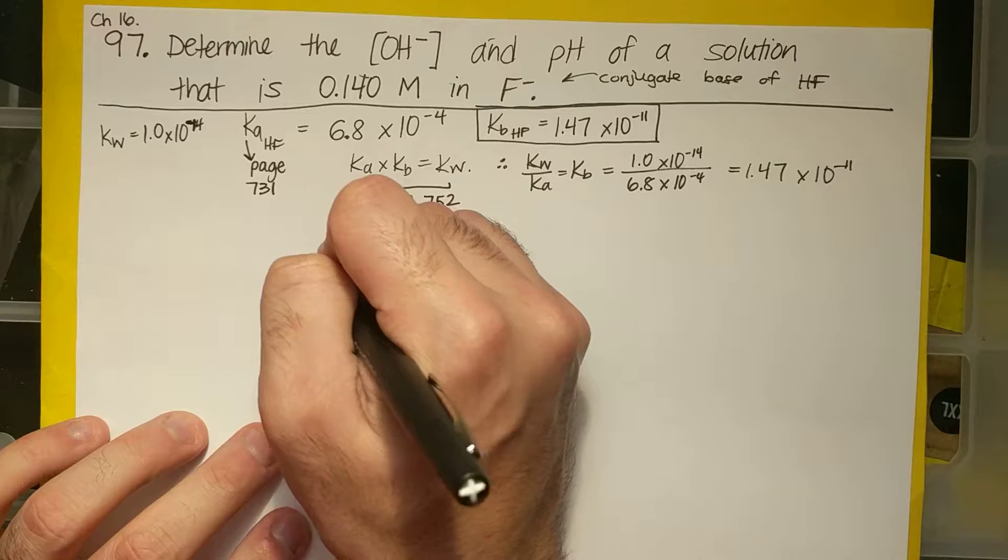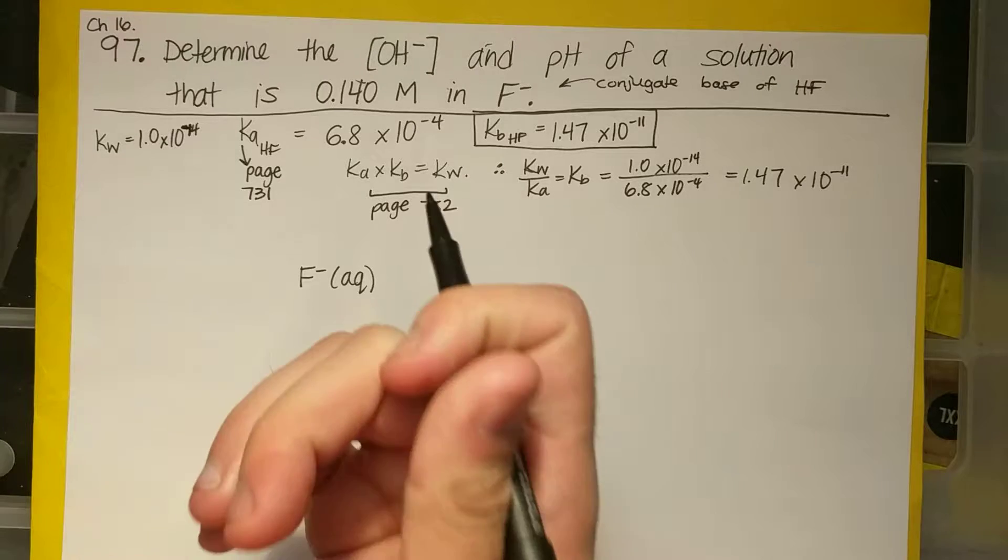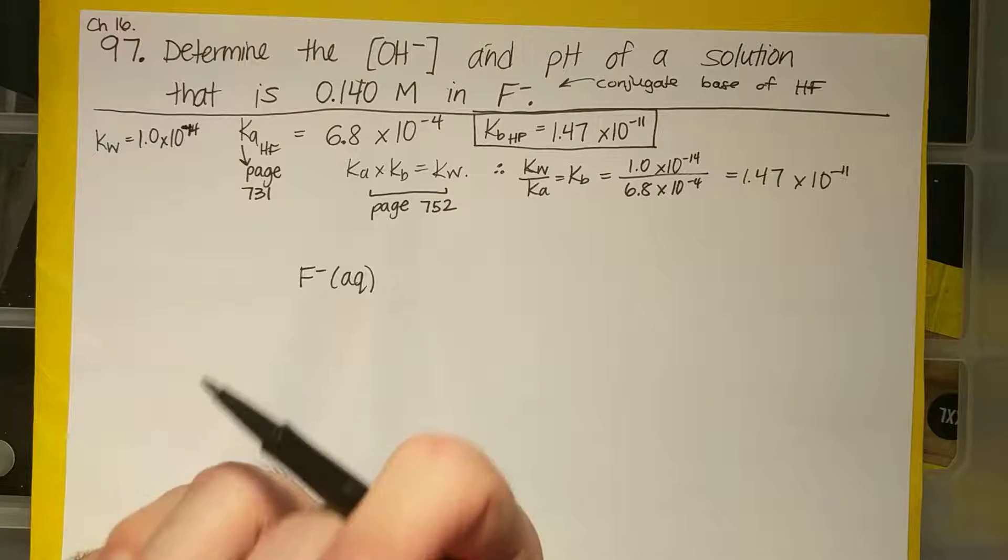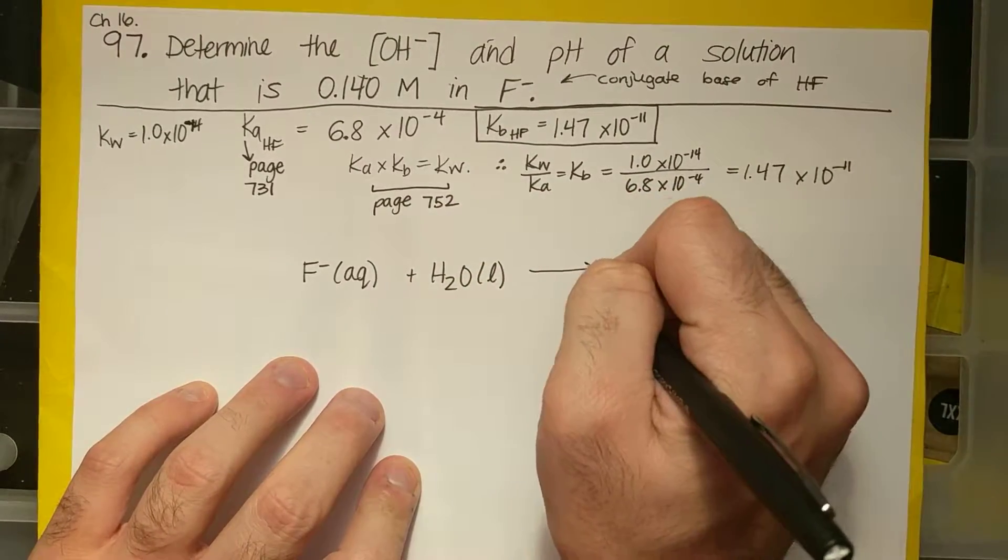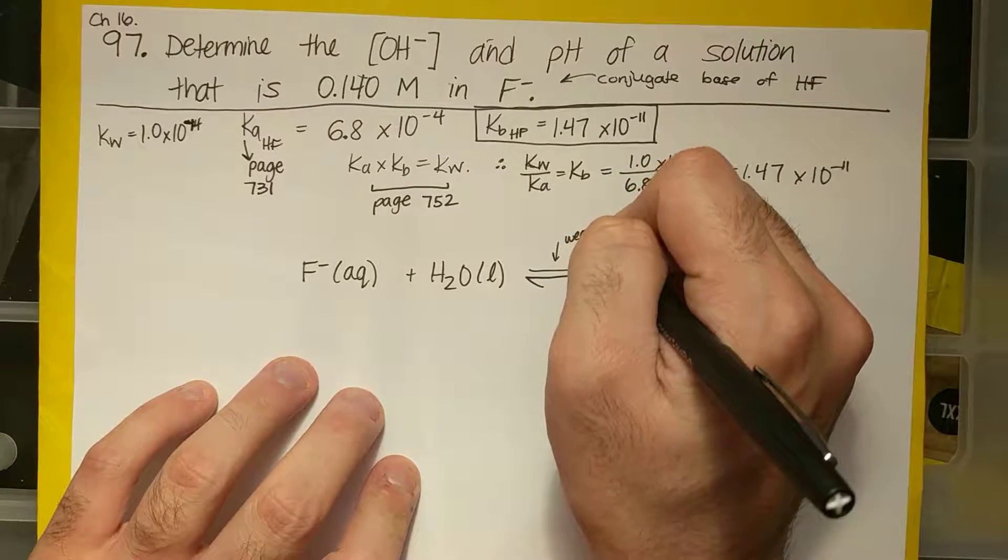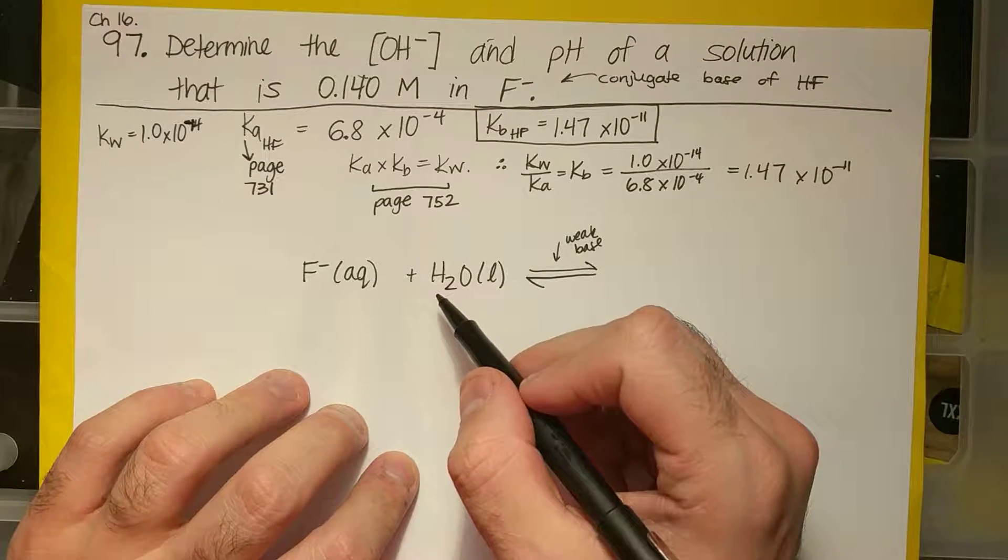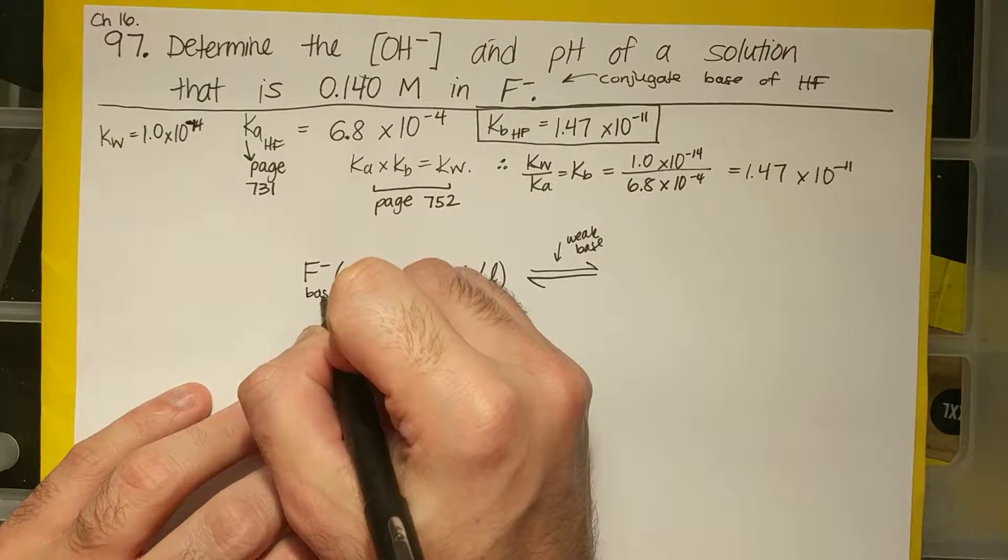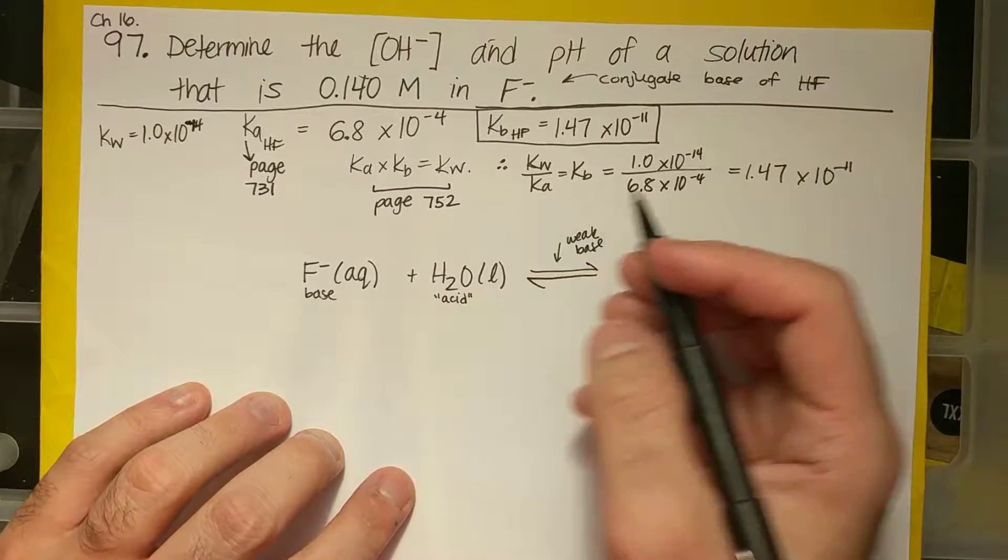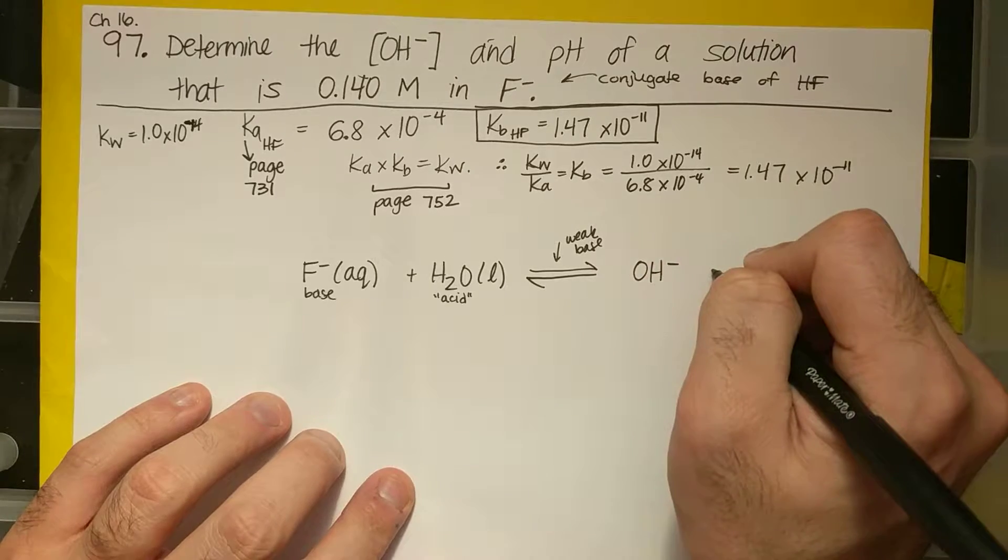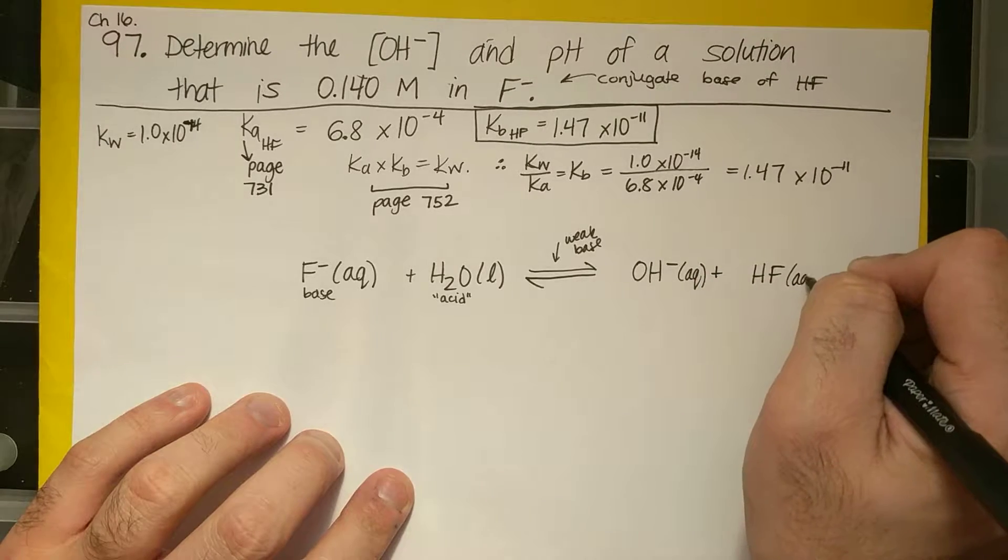So the equation is F⁻ aqueous. If I put F⁻ into solution, and it's 0.15 molar, what is that solution in? It's in water. So F⁻ plus H₂O liquid, and it's in equilibrium because it's a weak base. This is a very weak base. If I react a base with water, this acts as a base. Water will act as an acid. And so that base is going to remove a proton from water, and I will get OH⁻ plus HF aqueous.